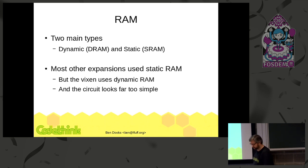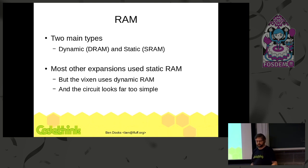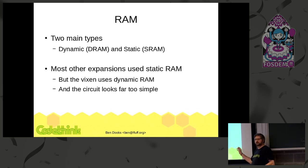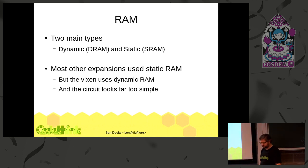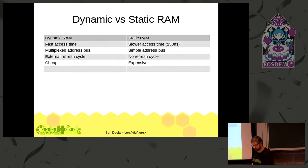There are two types of RAM from this sort of era: static and dynamic RAM. Nowadays there's pretty much only dynamic, because that's the type that won. But in this space, most of the expansions use static RAM. And this one, from looking at the picture, was using dynamic RAM. And I was thinking that circuit looks a bit too simple.